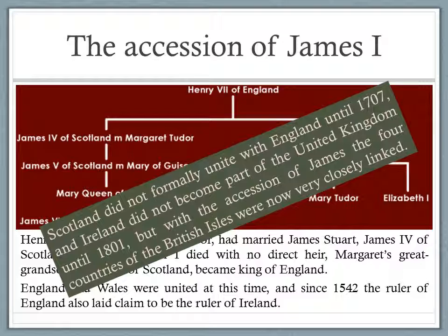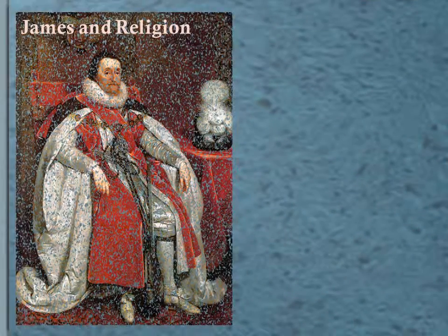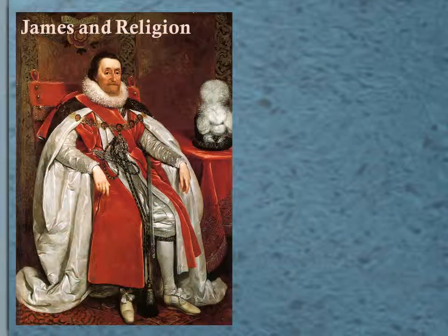At the time that James Stuart, James I, becomes king, that's the time when we can really see the four countries very closely connected with each other. I'm going to talk about James and religion, because that's one of the most important things we think about when we think about his reign.